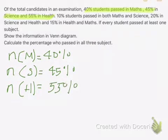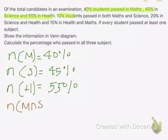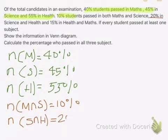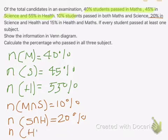Also, we've been told 10% passed in both math and science. So, math intersection science equals 10%. The number who passed in science and health is 20%, and in health and math is 15%.